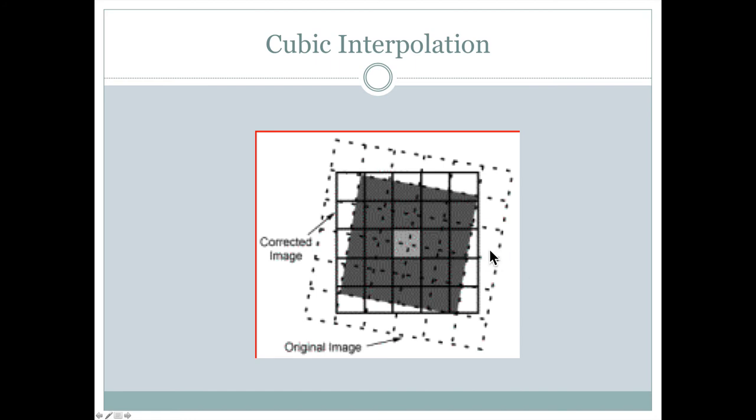And then the cubic interpolation just takes that further. It might take a four by four window from the original image and just take all of those values and maybe take an average and assign that value to just this one pixel of the corrected image. And that would be the same for every single one of the pixels in that image that's going through this sort of geometric correction.